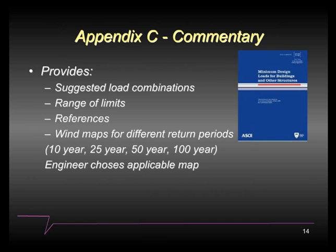The ASCE 7-10 commentary gives us some suggested load combinations to use, and a range of limits, but no specific requirements or guidelines — lots of references. Something important to notice in the last version, AISC 7-10: our wind load committee included maps intended to be used for serviceability design, encompassing a 10-year mean recurrence interval as well as 25-, 50-, and 100-year intervals. You as the design engineer are free to choose whatever mean recurrence interval you think is appropriate for your particular building. Again, there is no specific code requirement.